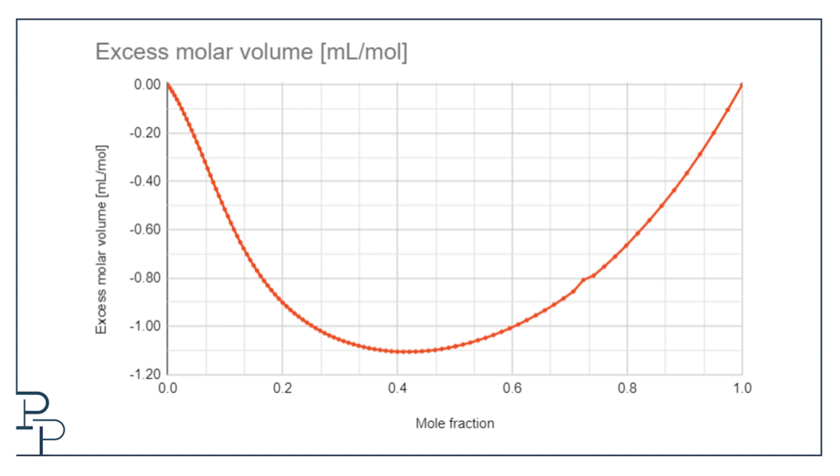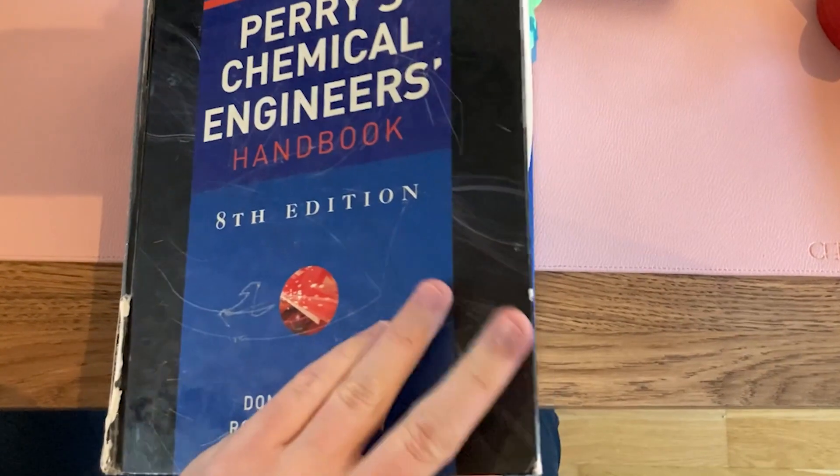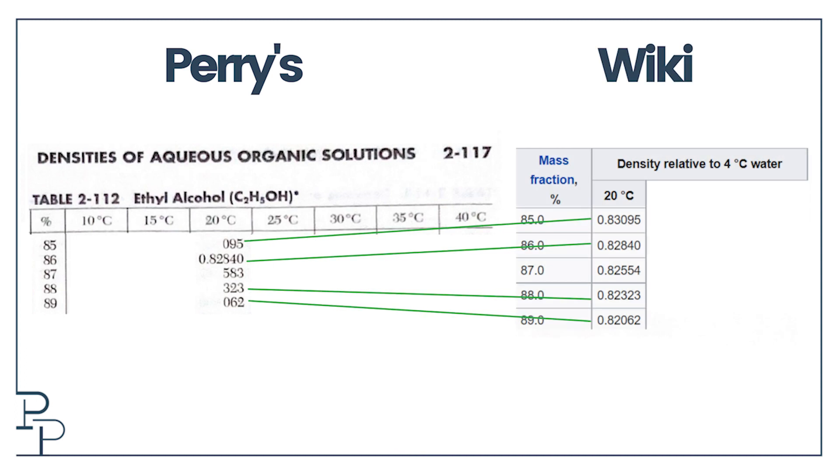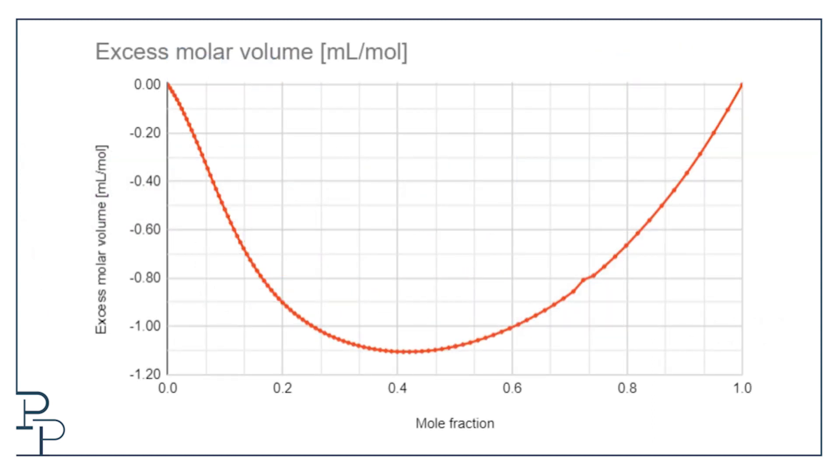For some reason there's a little bump on the excess molar volume and a mole fraction of 0.72 or a mass percent of 87 percent. This led me to believe that there is something wrong with the density data on wikipedia so I went and looked up the density in the bible of chemical engineering, Perry's chemical engineers handbook. Here is the Perry data from 85 to 89 weight percent ethanol at a temperature of 20 degrees. And have a look here. All the data points match except where I had the bump at 87 percent. If I correct the density from 0.82554 to 0.82583 then all of a sudden this curve looks like it makes more sense. So it looks like there was a typo on wiki.